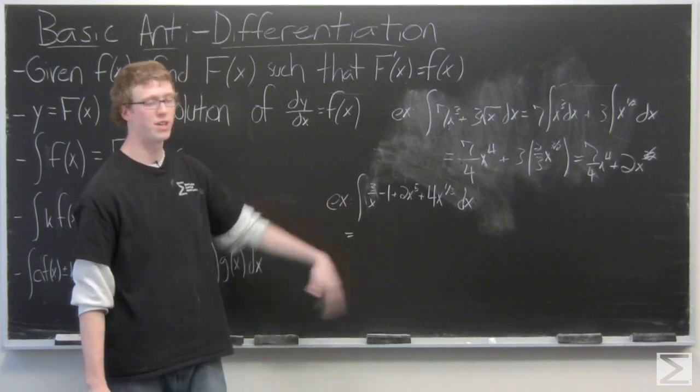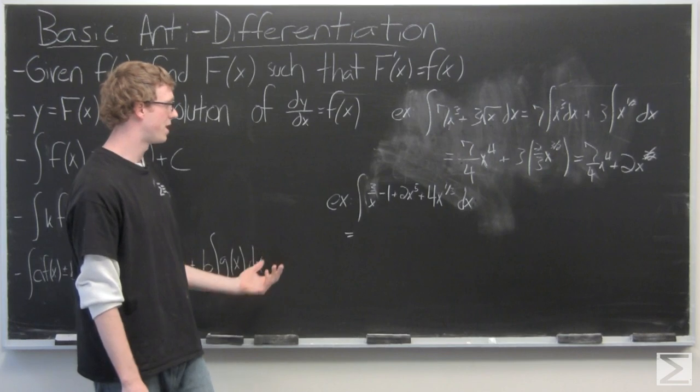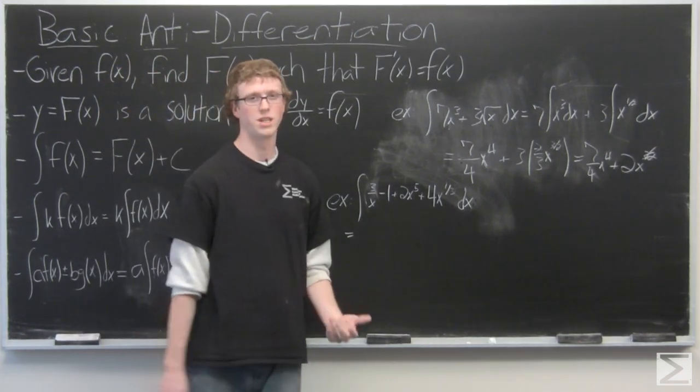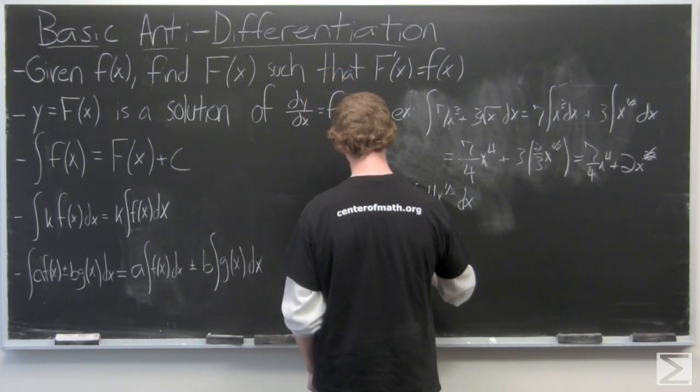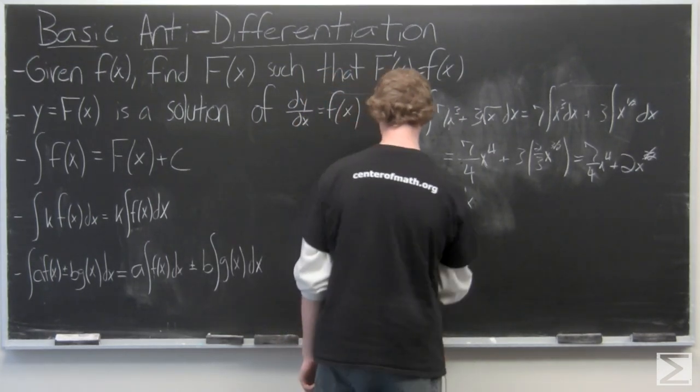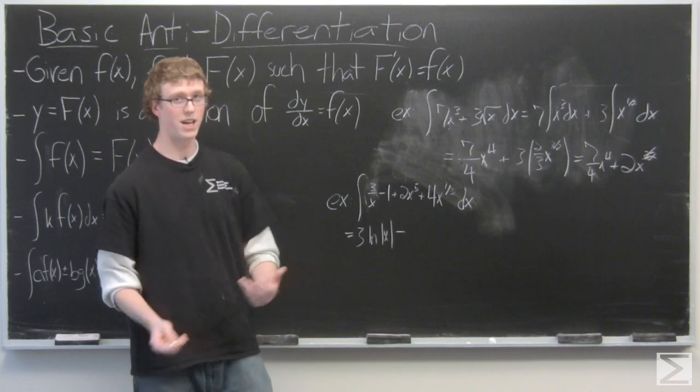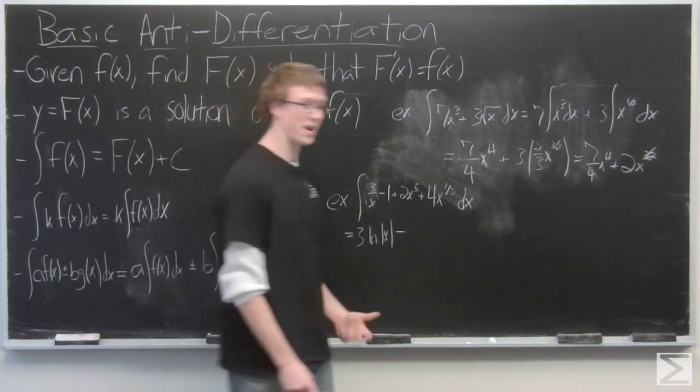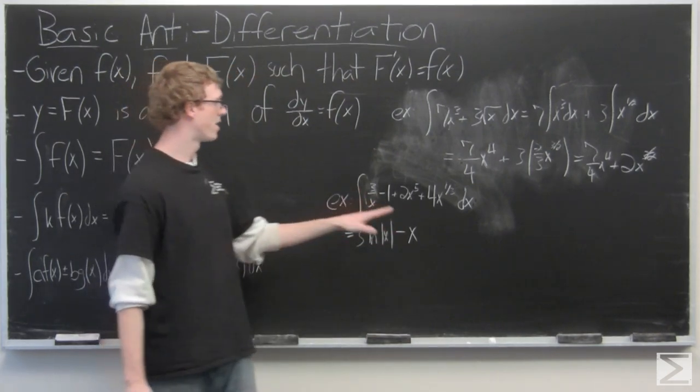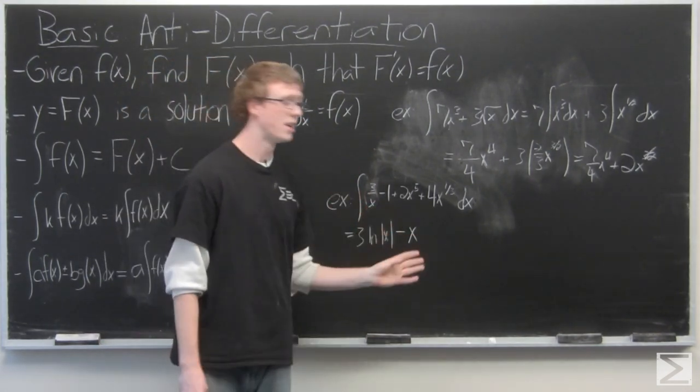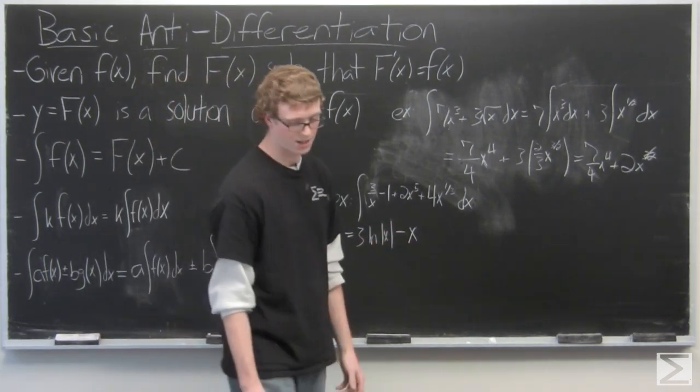If we pulled the 3 out in front of the individual integral for 3/x, it would be 3 times the integral of 1/x, which is just 3 times the natural log of the absolute value of x. This 1, it's just a constant 1, the derivative of negative x is negative 1, so it's minus x. Now we have 2x^5, so that's going to be 2 times the integral of x^5, which is just 2x^6 over 6, or 1/3 x^6.